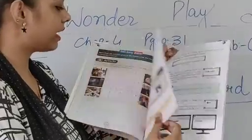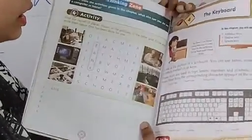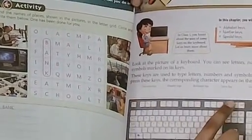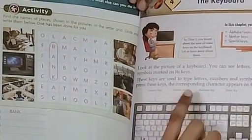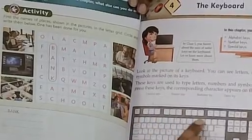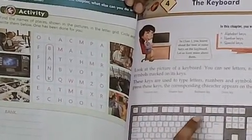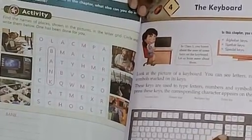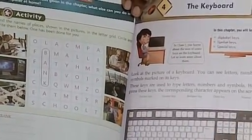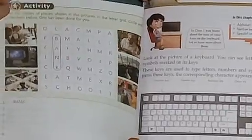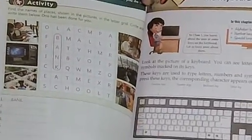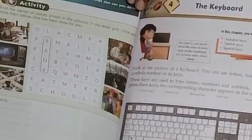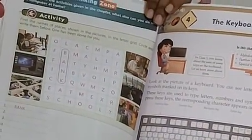Let us do a recap. This is the picture of the keyboard. These are the function keys. These are the number keys and backspace key is this one. Delete key, numeric key, caps lock key, alphabet key, space bar key, enter key and arrow keys.